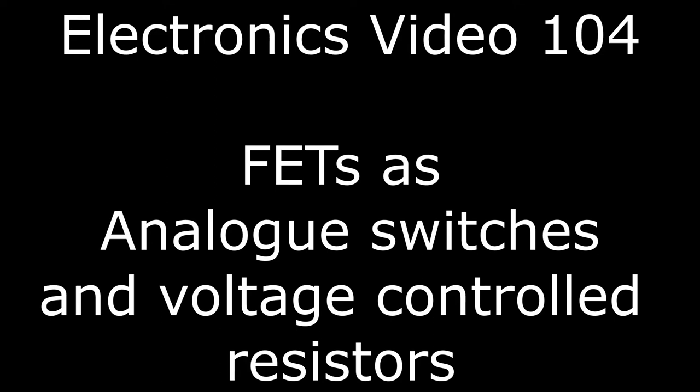Unlike the BJT, which has two junctions between the emitter and the collector, the FET has a single homogeneous channel. And this means that it can be used to switch analog signals on and off with minimal distortion.